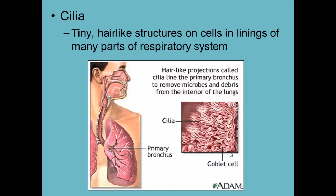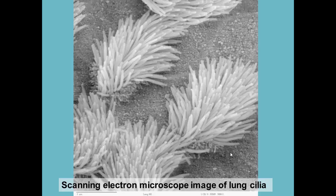Cilia — we've talked about cilia in past lessons. These are tiny hair-like structures on cells and in the linings of many parts of the respiratory system. The cilia help clean the air by waving very rapidly, keeping germs, microbes, and debris from getting inside the lungs and harming you. Here's a microscopic picture of lung cilia.